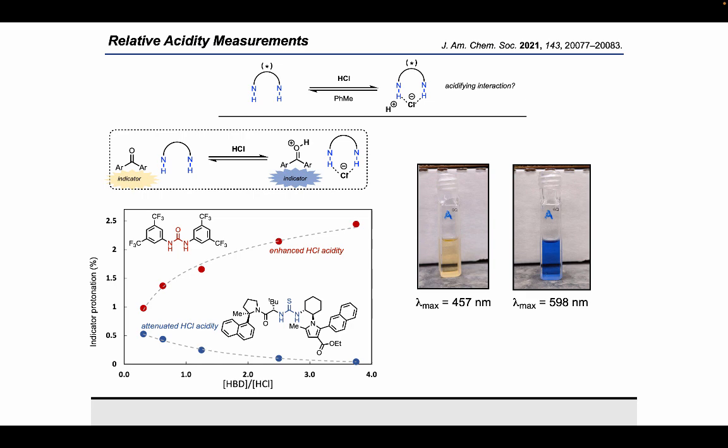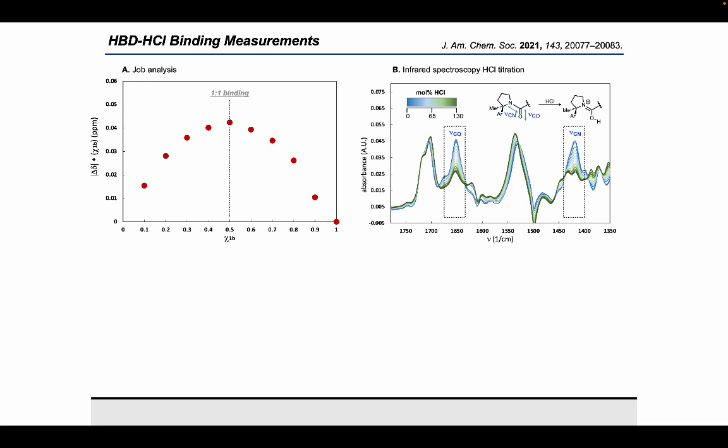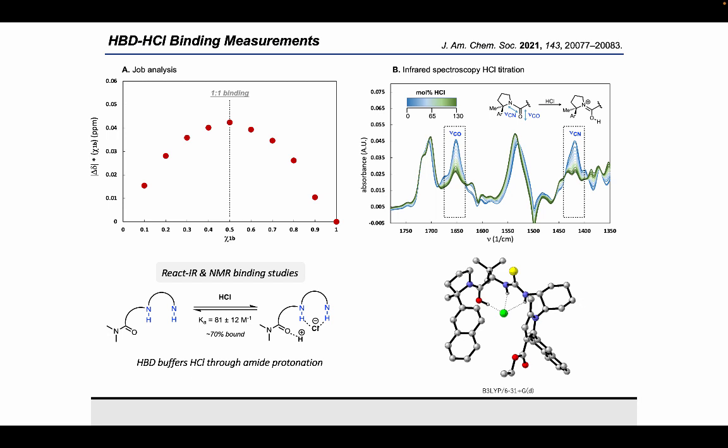To do so, we performed a series of ground state binding measurements aimed at understanding how HCl and the hydrogen bond donor interact, if at all. Through a Job analysis collected through NMR titration studies, we found that indeed the hydrogen chloride and H-bond donor associate, here in a 1-to-1 ratio. Beyond this, we were able to gain some structural insight into this type of binding interaction through the use of in-situ IR studies. Specifically, we found that successive addition of HCl to a solution of hydrogen bond donor catalysts resulted in significant perturbation of only two signals, those corresponding to the amide CO and CN stretching frequencies. Finally, a binding constant of 81 inverse molar was quantified by NMR methods, and the proposed one-to-one binding event featuring a protonated amide of the hydrogen bond donor could be located computationally.